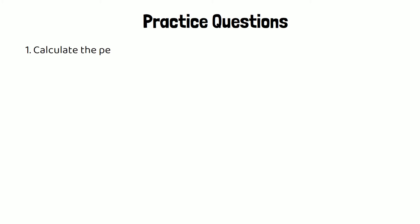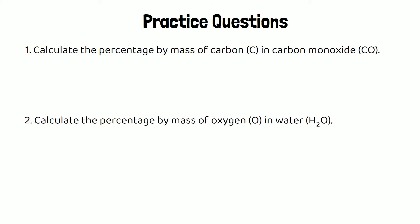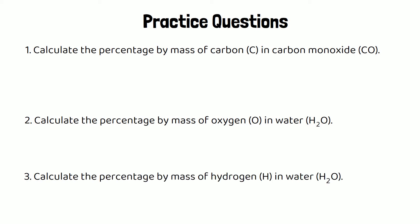Here are a few practice questions for you to have a go at. The first one is to calculate the percentage by mass of carbon in carbon monoxide. Secondly, the percentage by mass of oxygen in water, and finally the percentage by mass of hydrogen in water. You're going to need the relative atomic masses of all the elements present, which I'll put at the top, and you also need to work out the relative formula mass of the compounds. Pause the video and have a go.